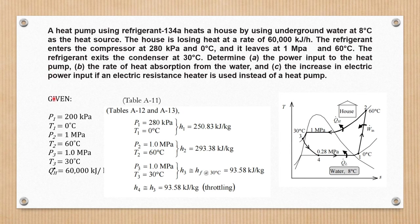First, we're going to identify the given: pressure 1 is equal to 200 kilopascal, temperature 1 is equal to 0 degrees Celsius, pressure 2 is equal to 1 megapascal, temperature 2 is equal to 60 degrees Celsius, pressure 3 is equal to 1.0 megapascal, temperature 3 is equal to 30 degrees Celsius, and Q̇_H is equal to 60,000 kilojoules per hour.